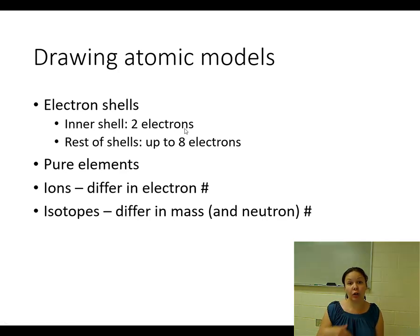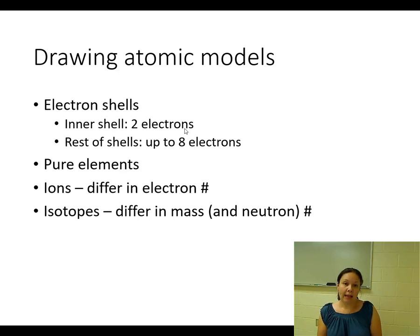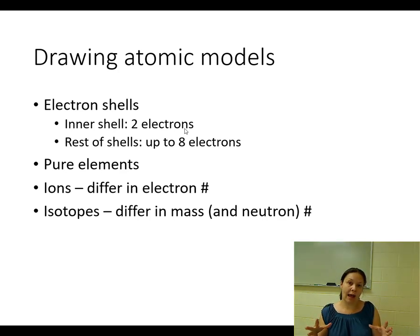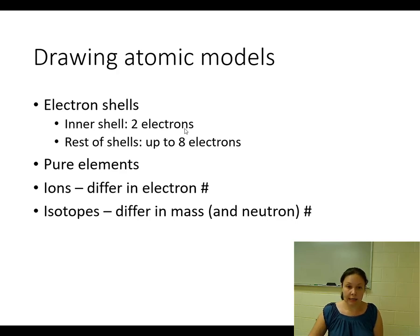Since carbon has 6 electrons, you draw 2 in its inner shell, and then you have 4 more electrons to draw. So you draw another shell surrounding the inner shell and add 4 electrons. Check that 4 plus the inner 2 adds up to 6 — and you have your 6 electrons. The general rule is: the first inner shell holds 2, and every shell after that holds up to 8.